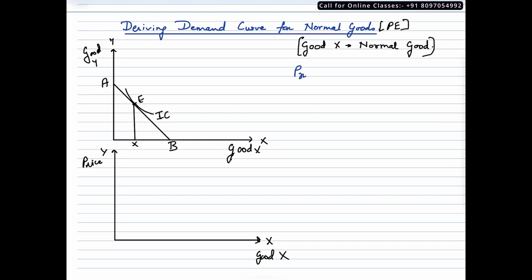price of commodity X falls. Now we should be aware that the budget line would rotate outwards, right? So let's draw the budget line.